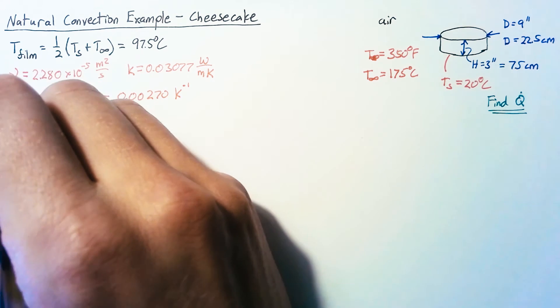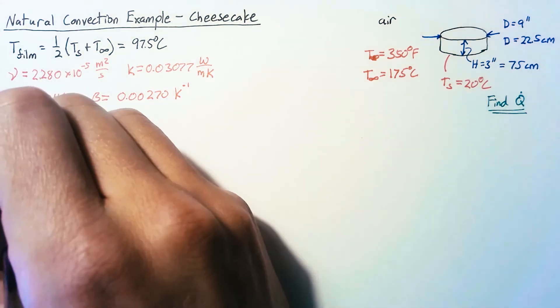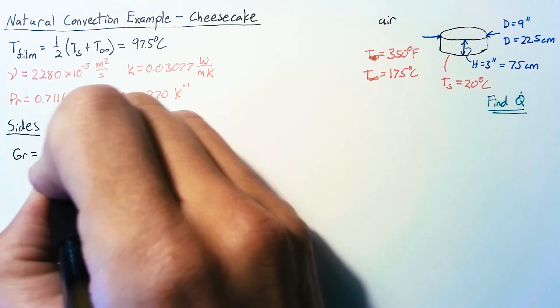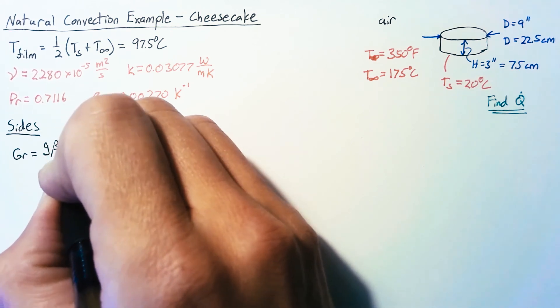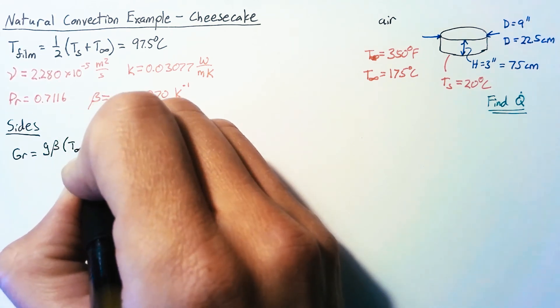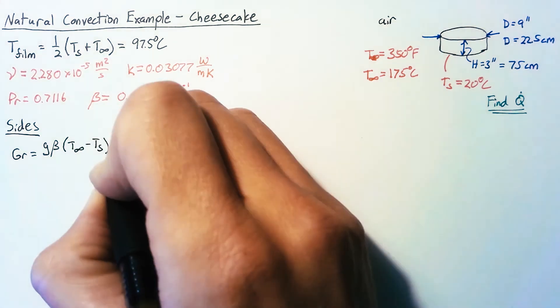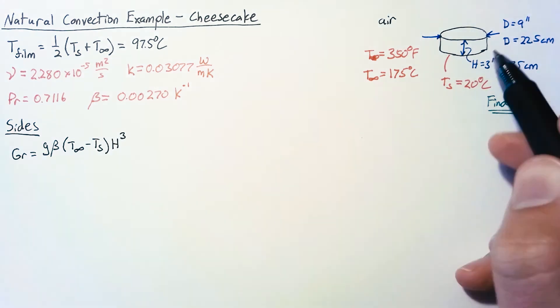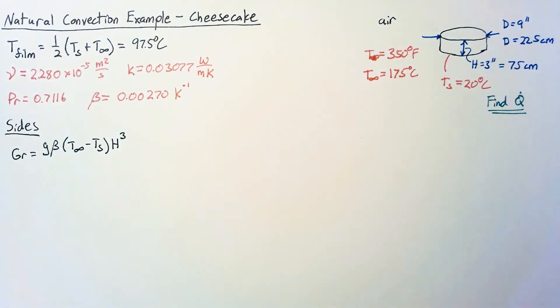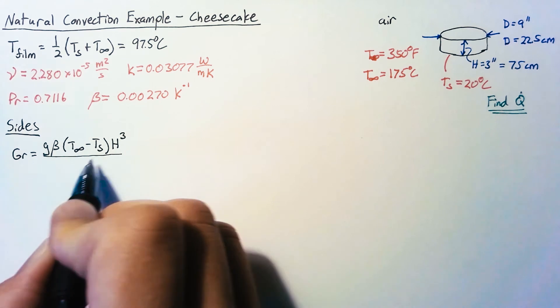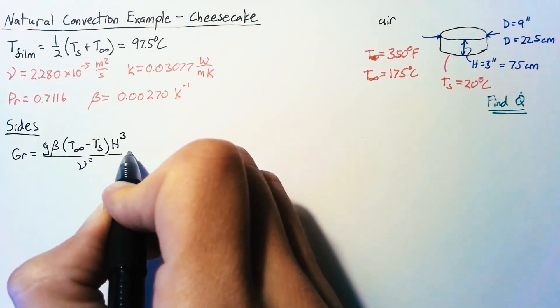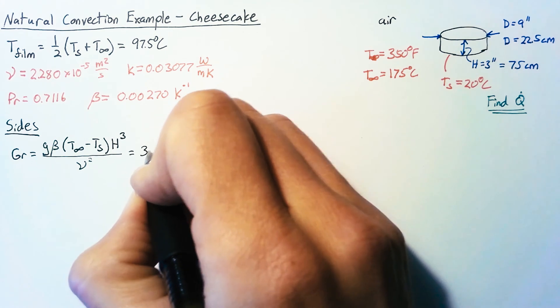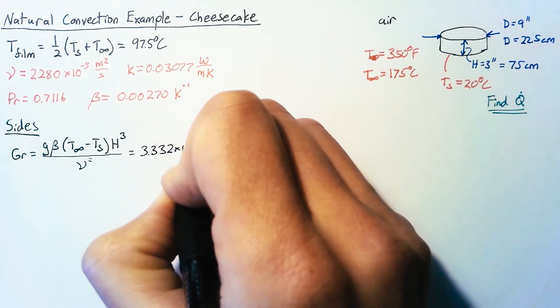So let's start off on our sides. Our Grashof number we know is gravity multiplied by beta multiplied by our delta T which is going to be T infinity minus T s just to keep things positive and that's going to be multiplied by our length scale cubed and our length scale for our sides is going to be the height. All of that is divided by nu squared. Plugging everything in we end up with the value of 3.332 times 10 to the sixth.